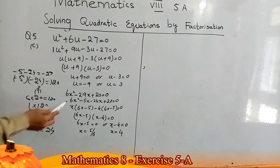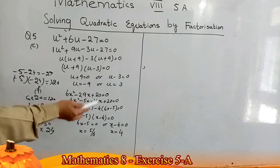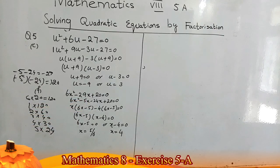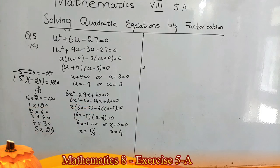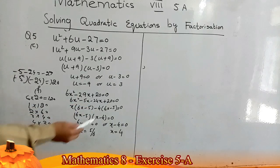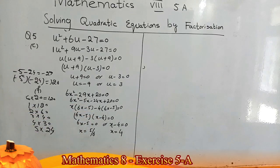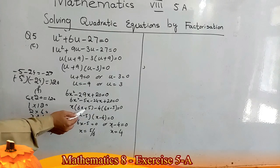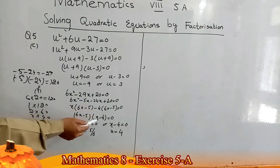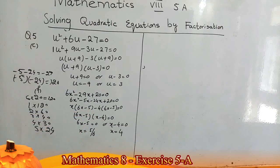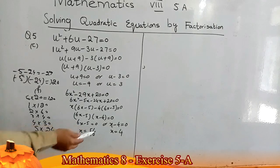Their product forms 120. I use −5 and −24 as coefficients of x: 6x² − 5x − 24x + 20 = 0. From the first two terms I take x as a common factor: x(6x − 5). From the last two terms I take −4 as a common factor: −4(6x − 5). Now (6x − 5) is common, giving (6x − 5)(x − 4) = 0. So x = 5/6 or x = 4.